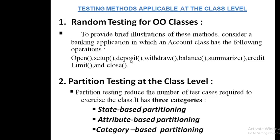The account class operations include: account setup, depositing an amount, checking the balance, asking for a summary, credit limit, and closing the account. So when we want to test this class, we first open the account, set up the account, deposit some amount, and then close the account. This is one type of testing to verify the account is working properly. Random testing means we take another random test sequence to verify the class.